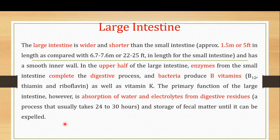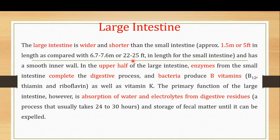The last organ of the digestive system is the large intestine. The large intestine is wider and shorter than the small intestine — it is approximately 1.5 meters or 5 feet in length. Compared to this, the small intestine is about 6.7 to 7.6 meters or 22 to 25 feet in length. So the large intestine is wider and shorter than the small intestine.